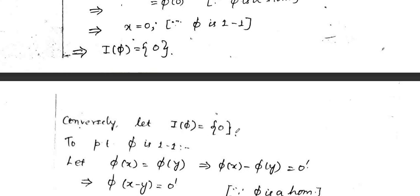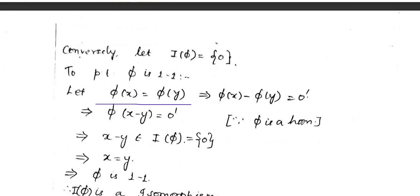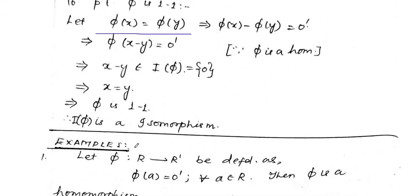Conversely, assume kernel phi is the singleton {0}; we prove phi is one-to-one. Suppose phi of x equals phi of y. Then phi of x minus phi of y equals 0 prime. Since phi is a homomorphism, phi of x minus y equals 0 prime, meaning x minus y belongs to kernel phi. But kernel phi is {0}, so x minus y equals 0, i.e., x equals y. Therefore, phi is one-to-one, and we conclude phi is an isomorphism.